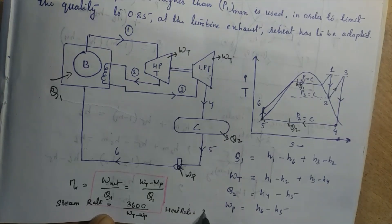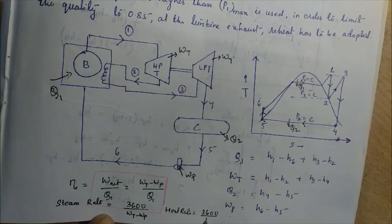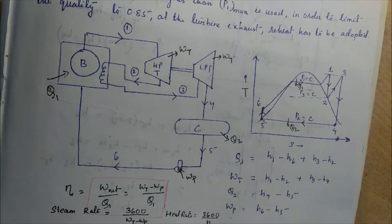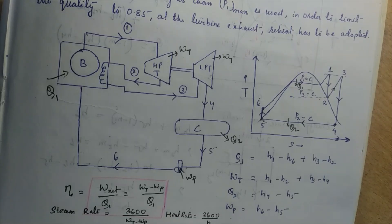The heat rate is equal to 3600 divided by efficiency. I think you now understand the reheat cycle. Thank you.